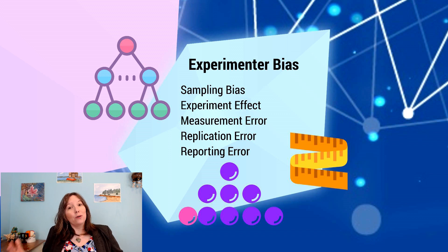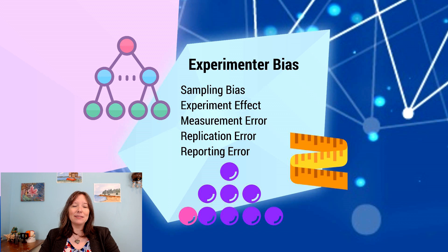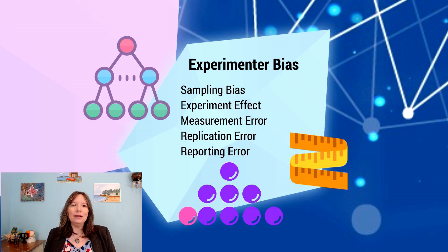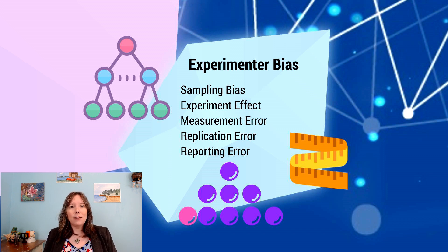On the researcher side, there is also a lot of experimenter bias. When an experimenter recruits participants, they may engage in sampling bias — recruiting people who are easy to recruit rather than those who are diverse or representative. This is why so many studies rely on undergrads, and for a long time in the United States most undergrads were men of European heritage from high-income backgrounds, meaning studies only reflected that perspective.